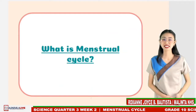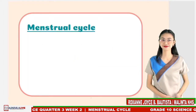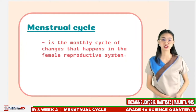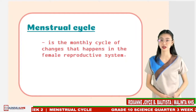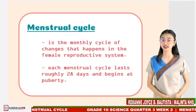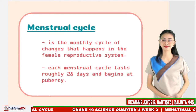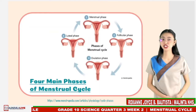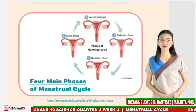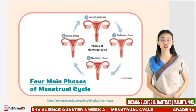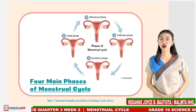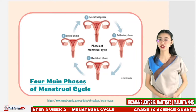What is the menstrual cycle? The menstrual cycle is the monthly cycle of changes that happens in the female reproductive system. Each menstrual cycle lasts roughly 28 days and begins at puberty. The entire duration of a menstrual cycle can be divided into four main phases: the menstrual phase, followed by the follicular phase, third is the ovulation phase, and lastly, the luteal phase.